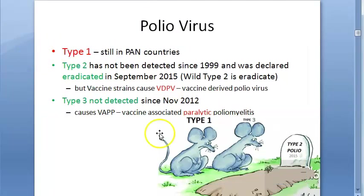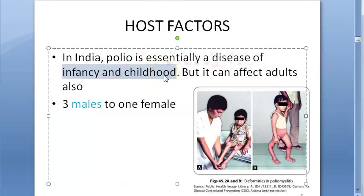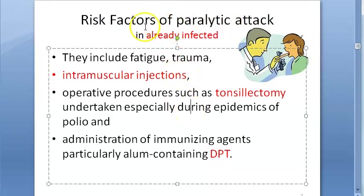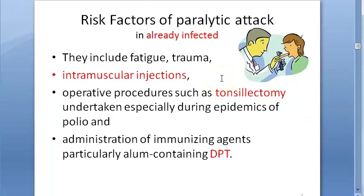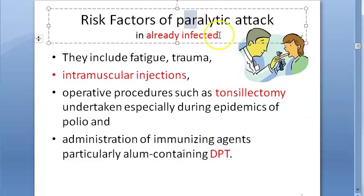Moving on to host factors — in India it is a disease of childhood and infancy, but adults can also be affected, and usually males are affected. If a person is already infected, the risk factors that can trigger a paralytic attack include fatigue, trauma, intramuscular injection, tonsillectomy, or DPT immunization. All of these can cause a paralytic attack in an already-infected person. Importantly, immunization can trigger the paralytic attack.